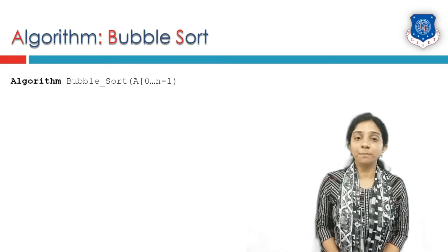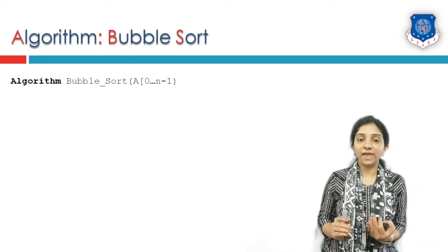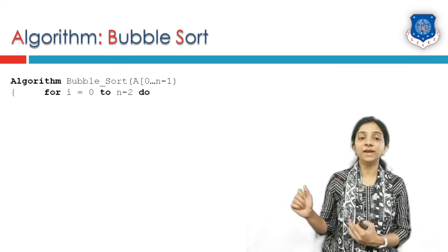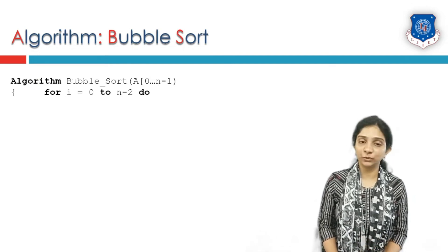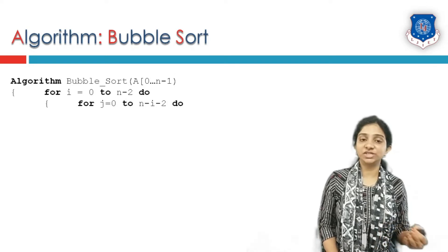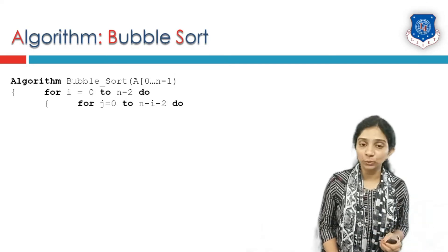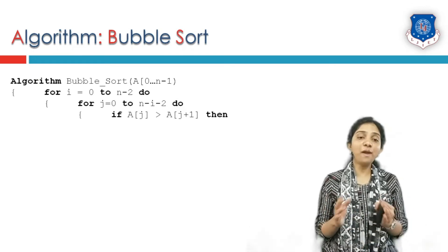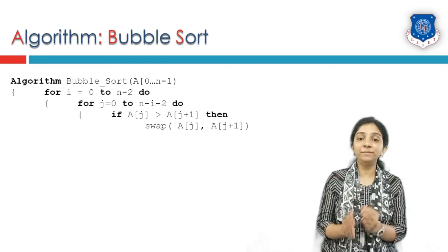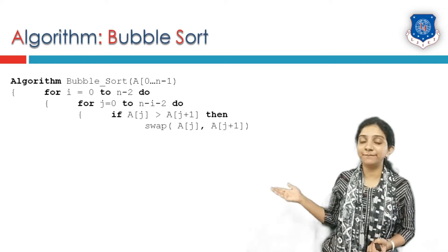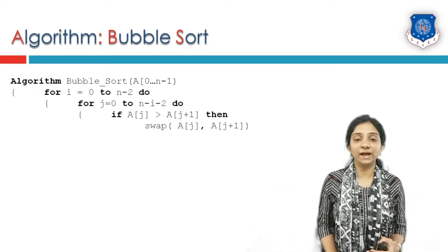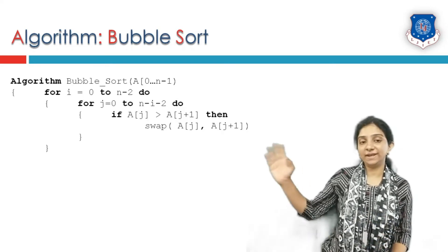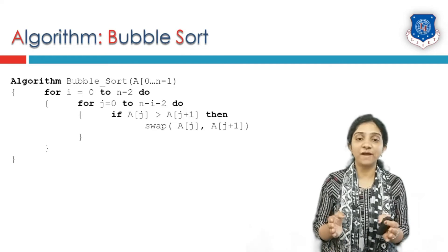Let us see the algorithm for bubble sort. Bubble sort takes input array a from index 0 to n minus 1. We generate passes using variable i: for i equals 0 to n minus 2. For each j equals 0 to n minus i minus 2, we compare element at j and element at j+1. That means if a[j] is greater than a[j+1], swap these two elements. You can use a swap function directly or write two to three lines for swapping. The comparison is performed i times into j times, and the elements of the array will be sorted.